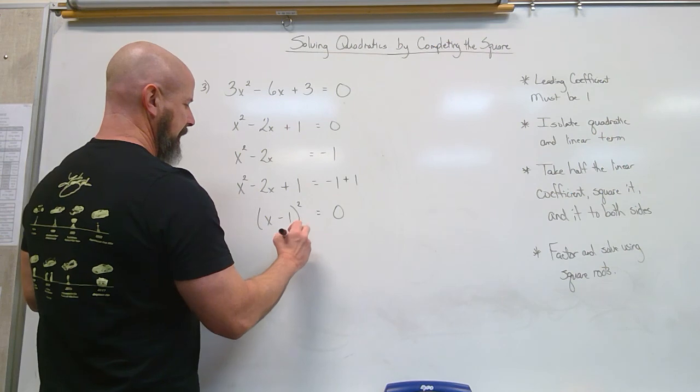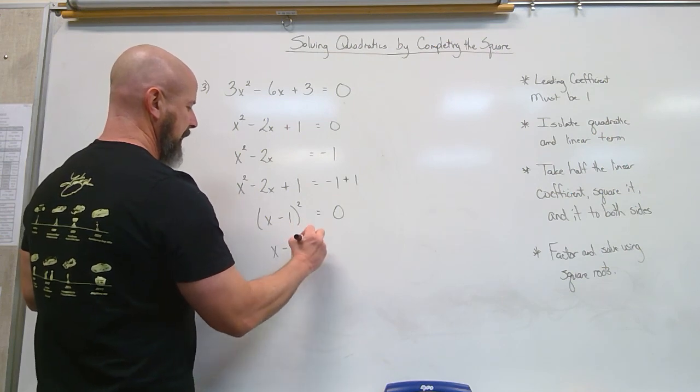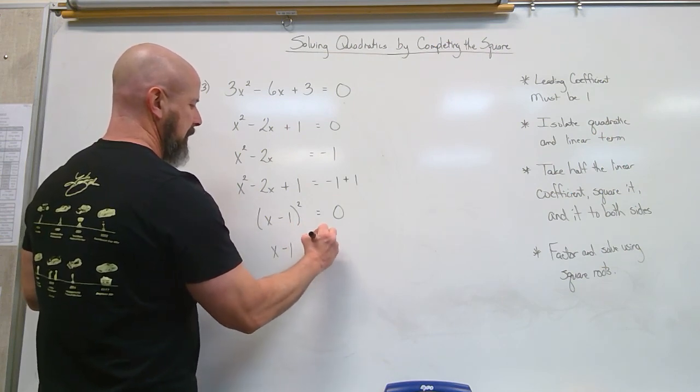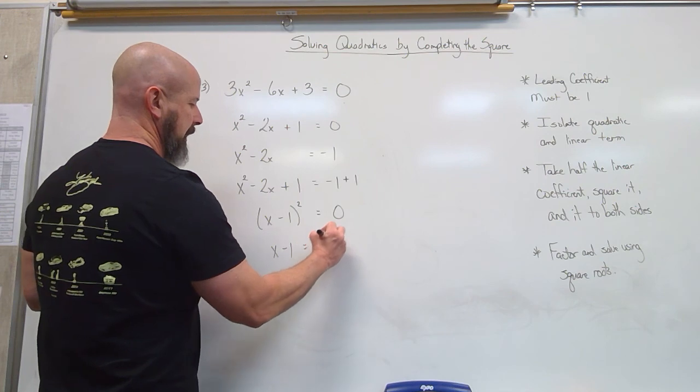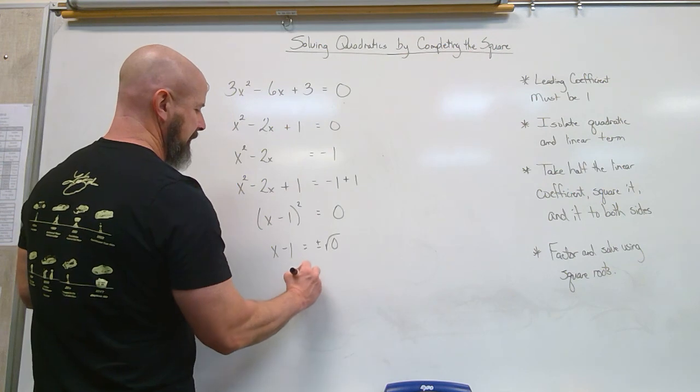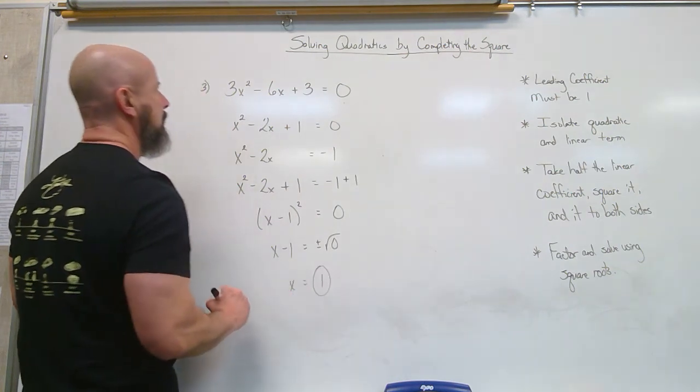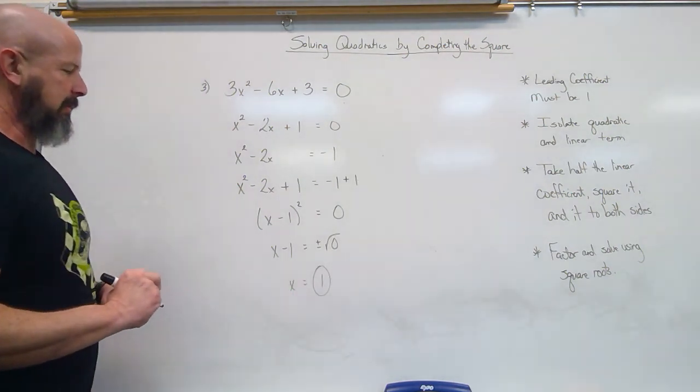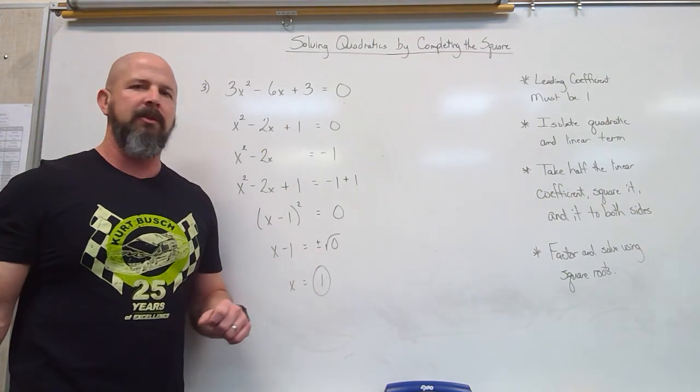And so then if I square root, x minus 1 is plus or minus root 0. I square root both sides. And so in this case, x just equals 1. x would just equal 1 because the square root of 0 is still 0.